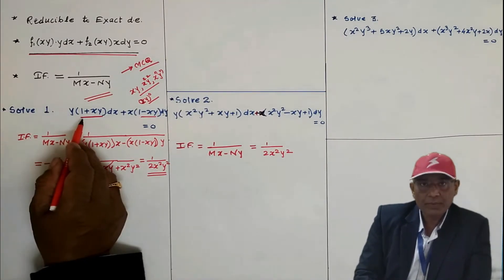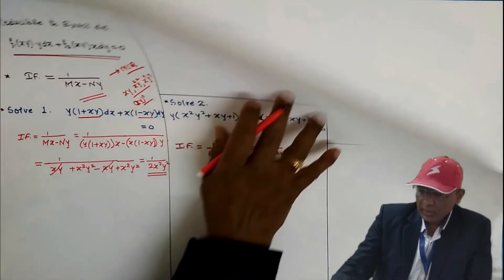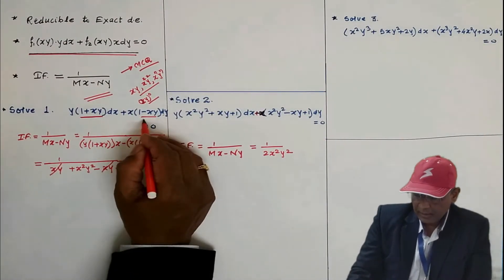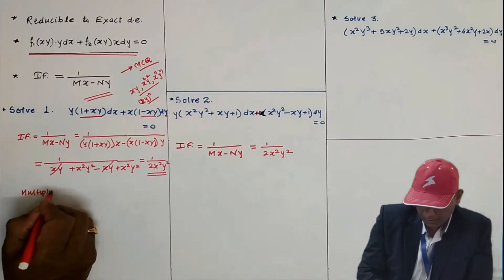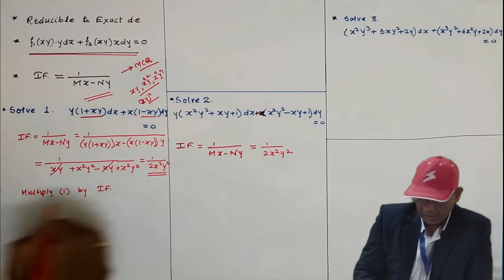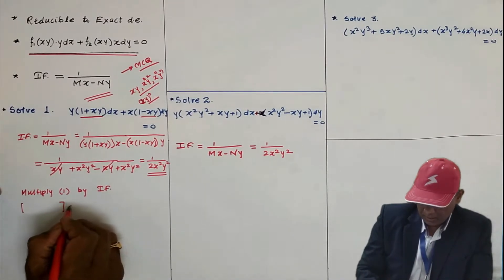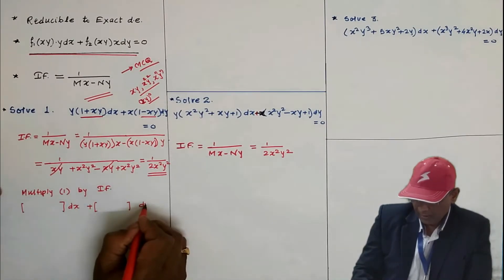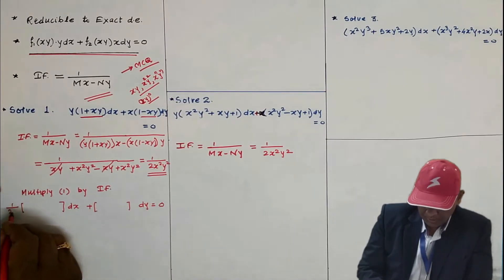The integrating factor 1/(2x²y²) may be asked as an MCQ — the differential equation will be given and you may be asked to find the integrating factor. Now, once you have the integrating factor, multiply equation 1 by the integrating factor.